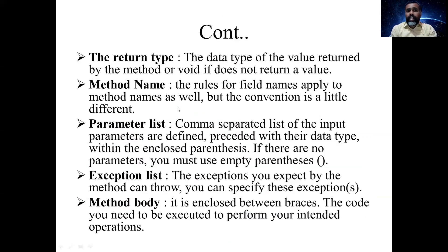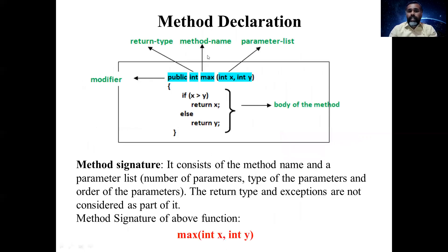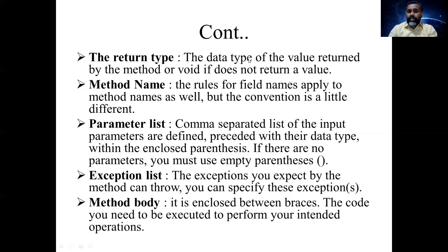The second component is the return type — the data type of the value returned by the method, if it returns a value. For example, this function returns a value x or y which is of type integer, so the return type is int. If the function does not return a value, we use void, meaning it has no return value.